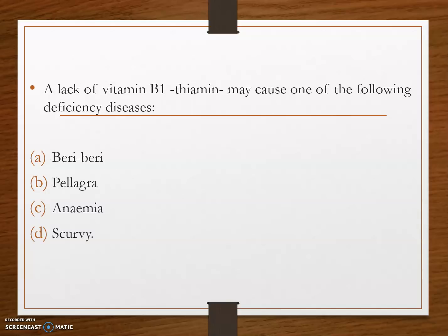Next question: a lack of vitamin B1 (thiamine) may cause which deficiency disease? Option A, beriberi; option B, pellagra; option C, anemia; and option D, scurvy. The answer is option A, beriberi. Beriberi is the deficiency disease caused due to the lack of vitamin B1.